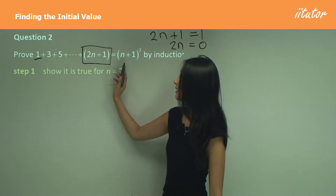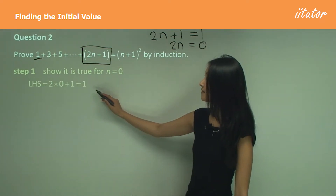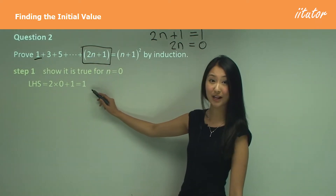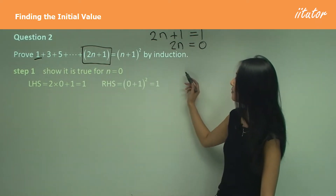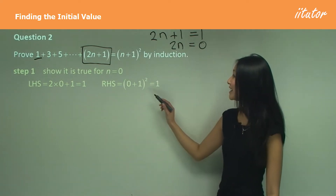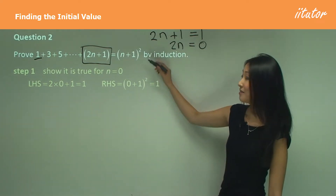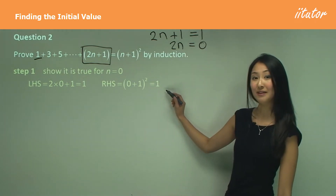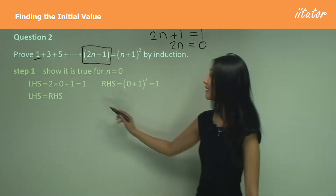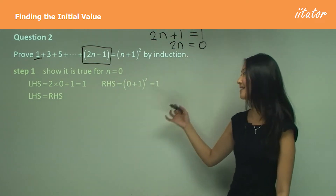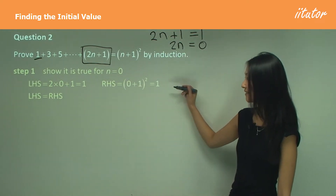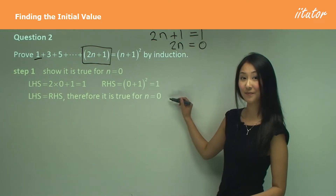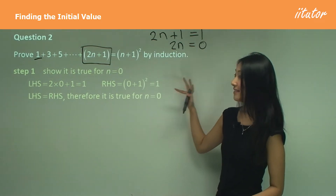So how do we show it's true for n equals 0? We consider the left hand side first: using the general formula, 2 times 0 plus 1 equals 1. Then we consider the right hand side: 0 plus 1 squared also equals 1. The left hand side does in fact equal the right hand side, so therefore it is true for n equals 0. That completes step 1.